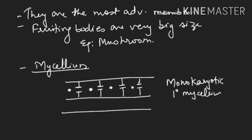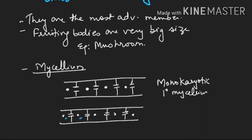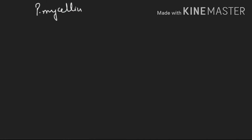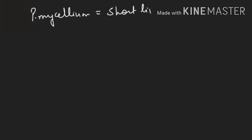It can also be secondary mycelium with dolipore septa. Secondary mycelium means dikaryotic mycelium — the two nucleus separation will be done. So it is having two types of mycelium: monokaryotic mycelium and dikaryotic mycelium. In case of Basidiomycetes, primary mycelium is short-lived and secondary mycelium is the dominant phase.